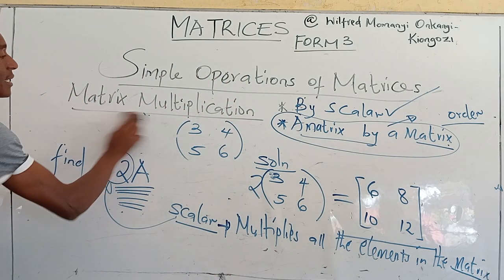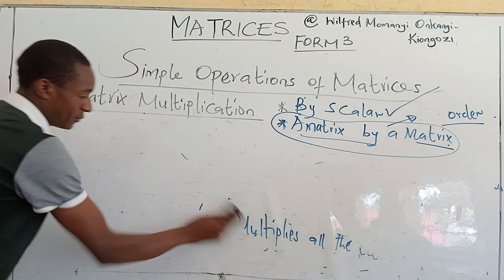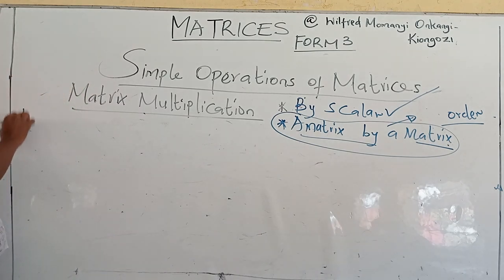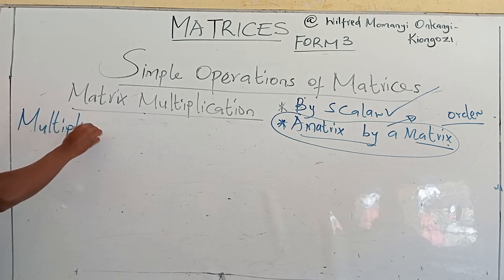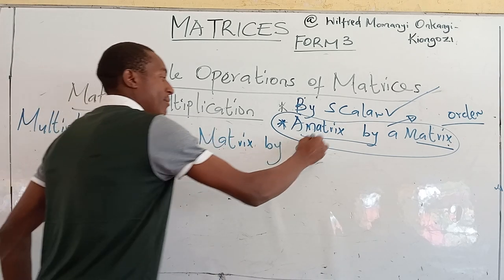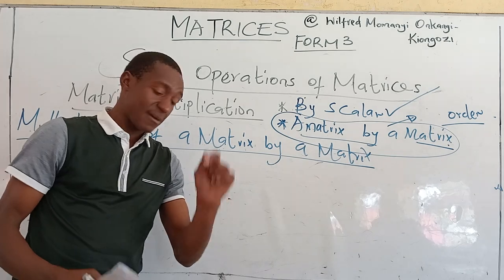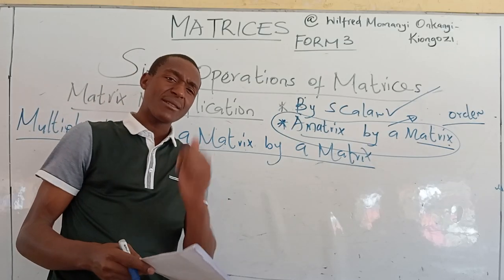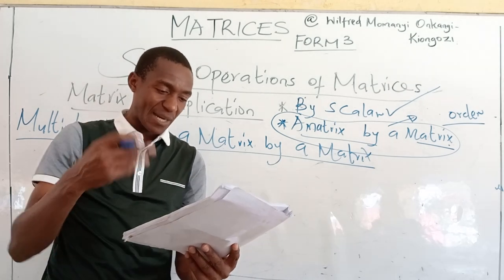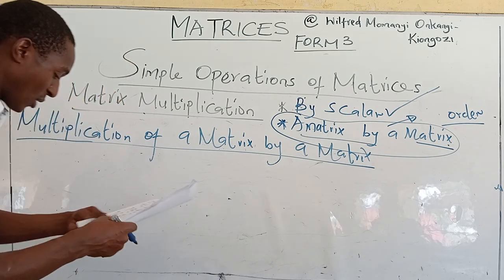So objective one — multiplying by a scalar — successful. We go to multiplying a matrix by another matrix. I have highlighted that for matrices to be multiplied, they don't have to be of the same order. I will start with two matrices of the same order and show you the technique. Pay attention.